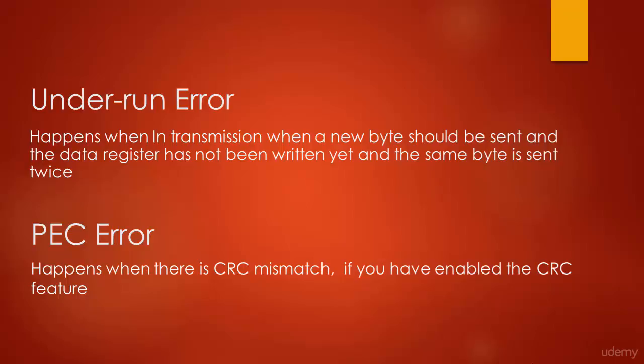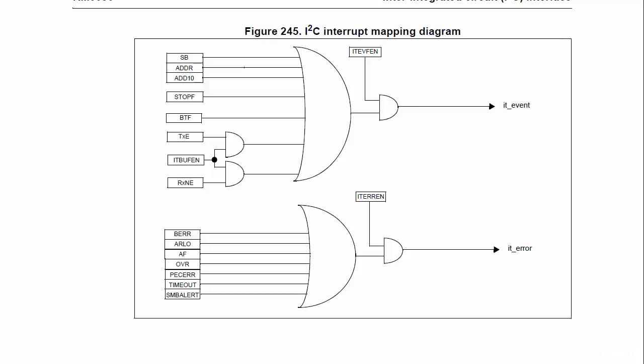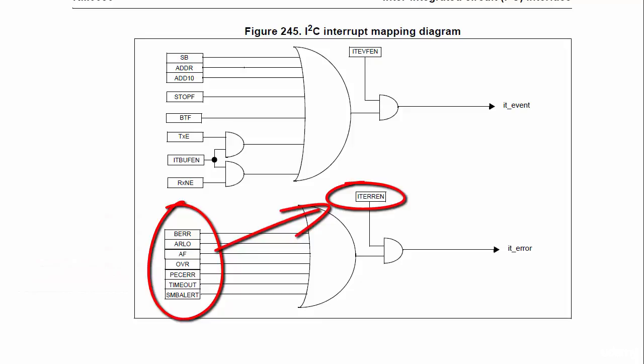PEC error will happen when there is a CRC mismatch, if you have enabled the CRC feature. Timeout error happens when the master or slave stretches the clock by holding it low for more than the recommended amount of time — the I2C hardware will reset itself and issue the timeout error. Whenever any of these errors occur, the corresponding flag will be set and interrupt the processor, if the error control bit is set.